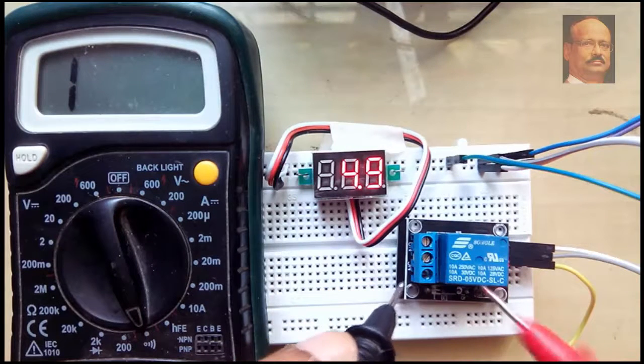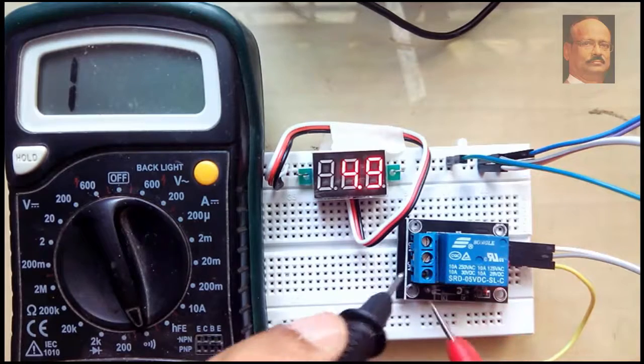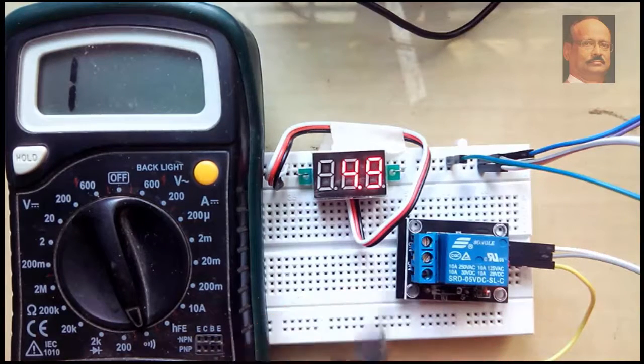Once the relay is powered, we find this point gets connected to this point. And when it is not powered, it is from this point to this point.